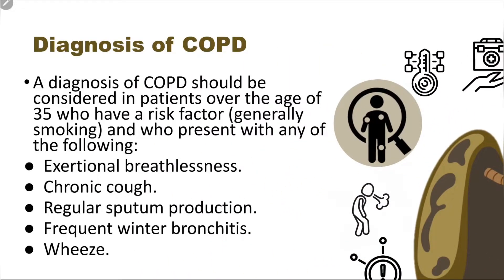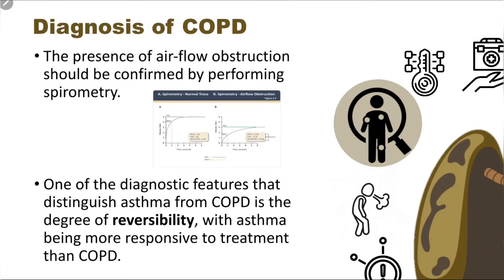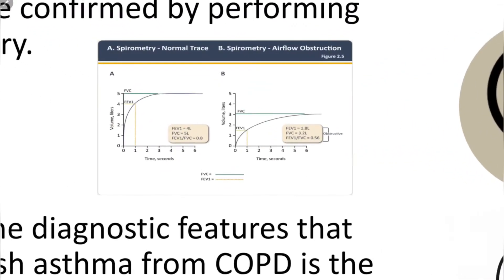The diagnosis should be considered in any patient with age more than 35 and a smoking history. They may have exertional shortness of breath, chronic cough which might be dry but usually with sputum production, regular sputum production, frequent winter bronchitis, and also wheeze. The presence of airflow obstruction should be confirmed by performing spirometry, although spirometry is not available in emergency departments.